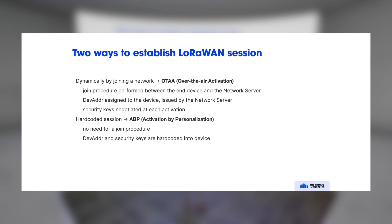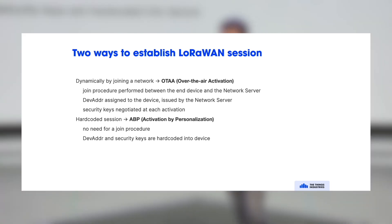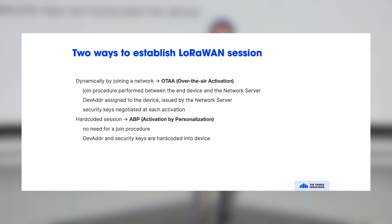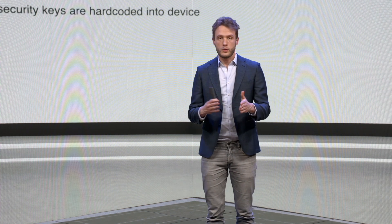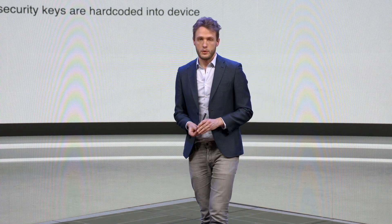The alternative is a hard-coded session, called ABP — Activation by Personalization. There is no join procedure; instead, the end device is pre-programmed with a device address and session keys. This is typically more efficient because you don't need a join procedure, but it's not as secure because you cannot really change networks throughout the lifetime of the end device.